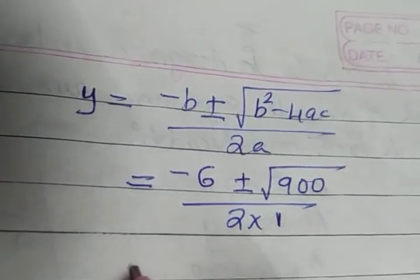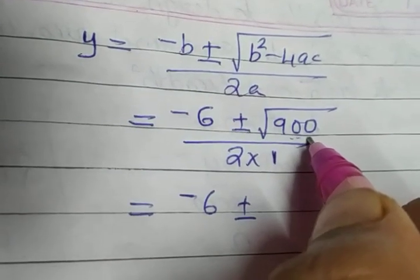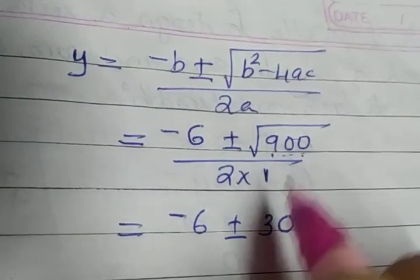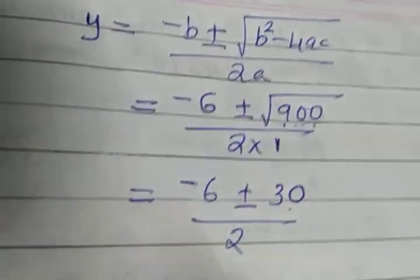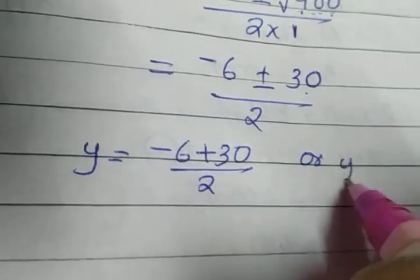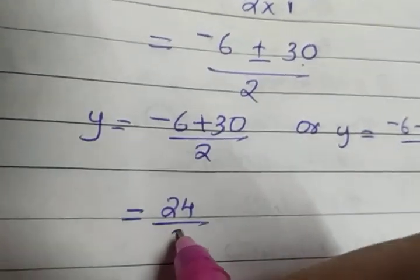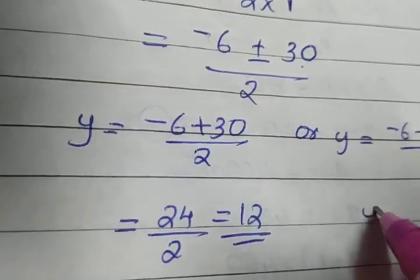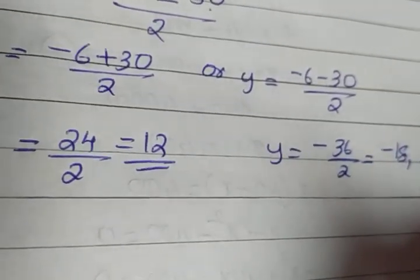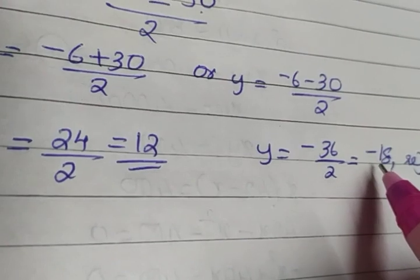The square root of 900 is 30. So y equals minus 6 plus 30 divided by 2, or y equals minus 6 minus 30 divided by 2. The first gives 24 divided by 2, which is 12. The second gives minus 36 divided by 2, which is minus 18. We reject minus 18 because the side of a square cannot be a negative value.